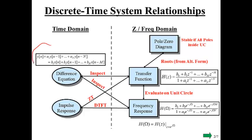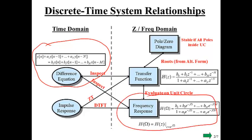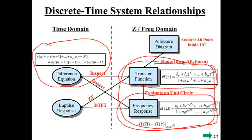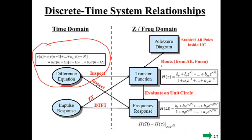We started from the difference equation. We saw that we could get the frequency response from that difference equation. We've also seen that by inspection we can get the transfer function. We've seen that those two things are related to each other by just simply evaluating on the unit circle, which just means taking the Z transform, and everywhere there's a Z, replacing it by E to the J omega.